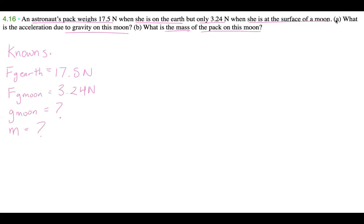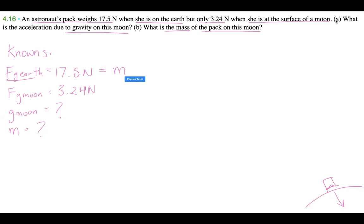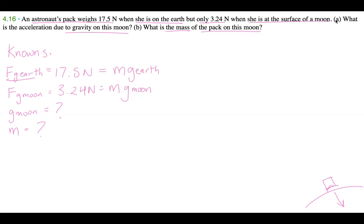We don't really need a picture for this since it's just an object on a surface with one force of gravity. For the analysis, let's recognize the formula for weight: weight equals mass times gravity on Earth, and similarly on the moon it's mass times gravity on the moon. We also know gravity on Earth is 9.8 meters per second squared.